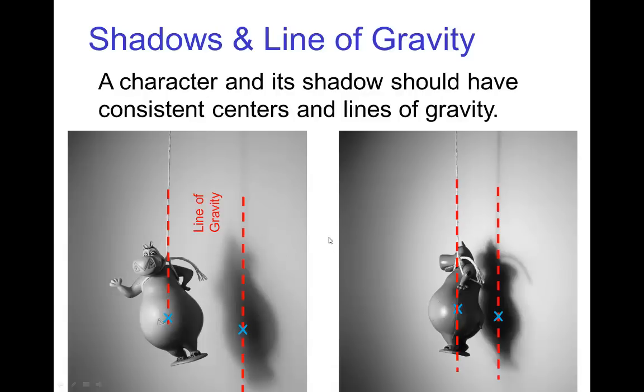One last thing about the center of gravity and line of gravity is the line of gravity has to be consistent no matter what the camera angle. And along with that, the shadow of a character has to have a consistent line of gravity.